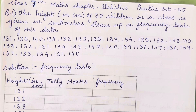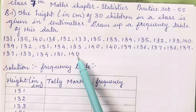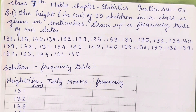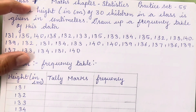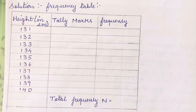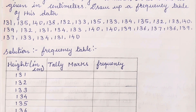In this question, a set of numbers starting from 131 to 140 has been given as mixed numbers. We have to write it in the form of a table — that is the question given in the textbook. You all have to write it in a table. There are many numbers given, so you have to write the tally — meaning count how many times each number appears and then write the frequency. So let's start.